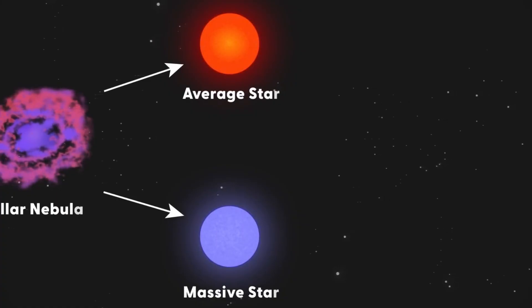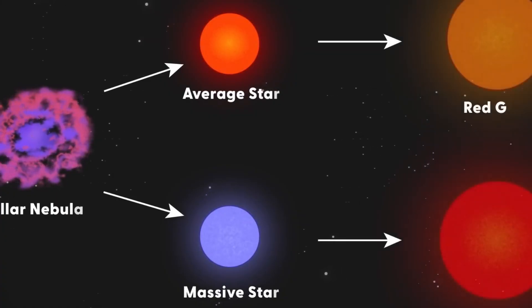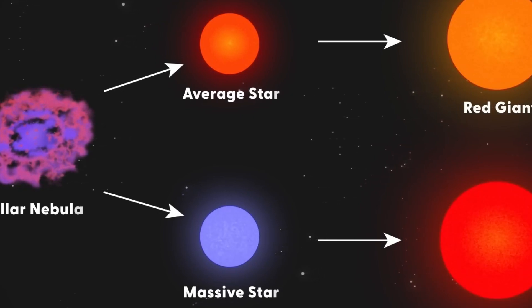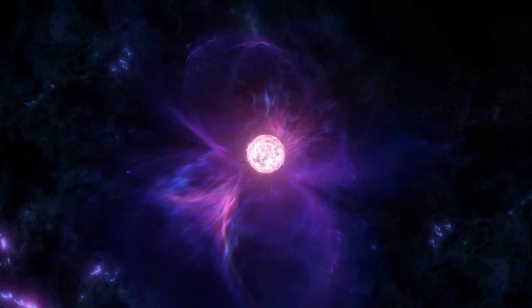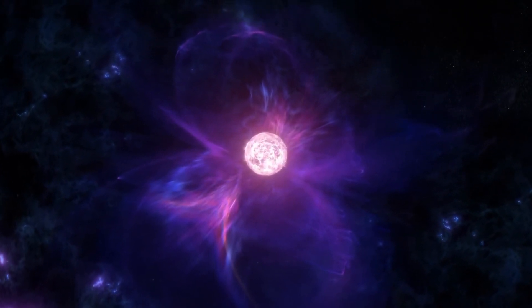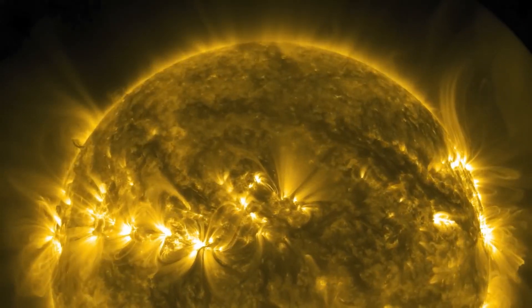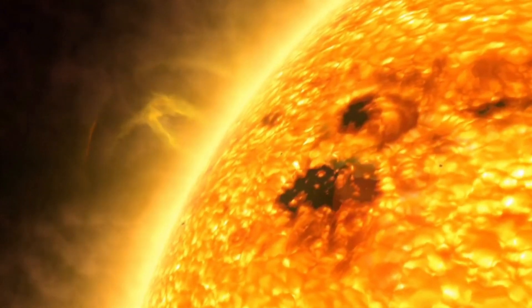Betelgeuse was already a very large star before it inflated into a red supergiant. These types of stars generally have much shorter lifespans than our sun, for example, which has already been around for 4.5 billion years, and is expected to continue shining happily for another 4.5 billion years.